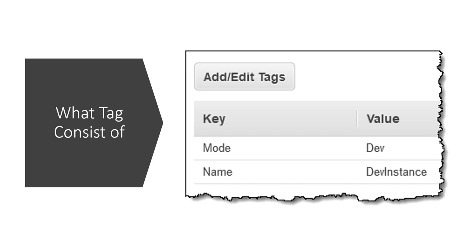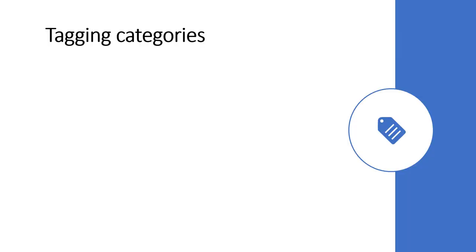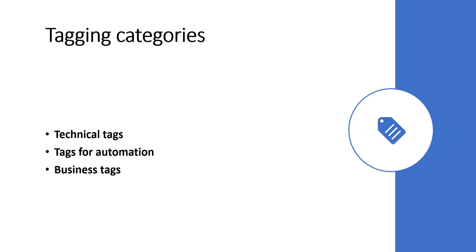There are some tagging categories to make best effective use of tags. One is technical tags — you can tag with name, environment, or version. Next is automation tags — for example, a date-time tag that is helpful in automation scripts to identify resources. Then there are business tags, such as project name, owner, customer, or business unit.